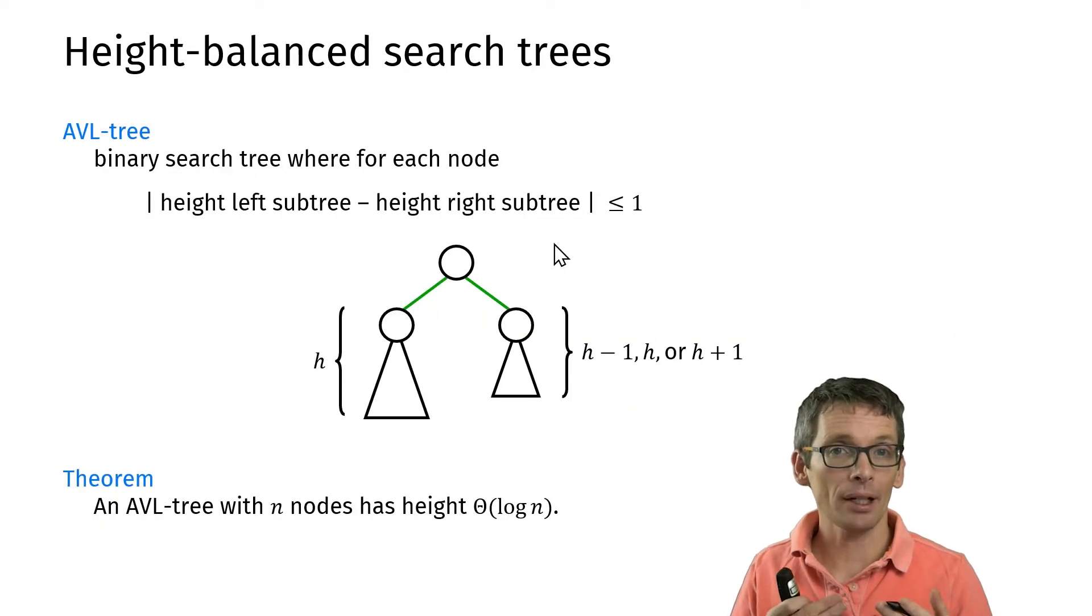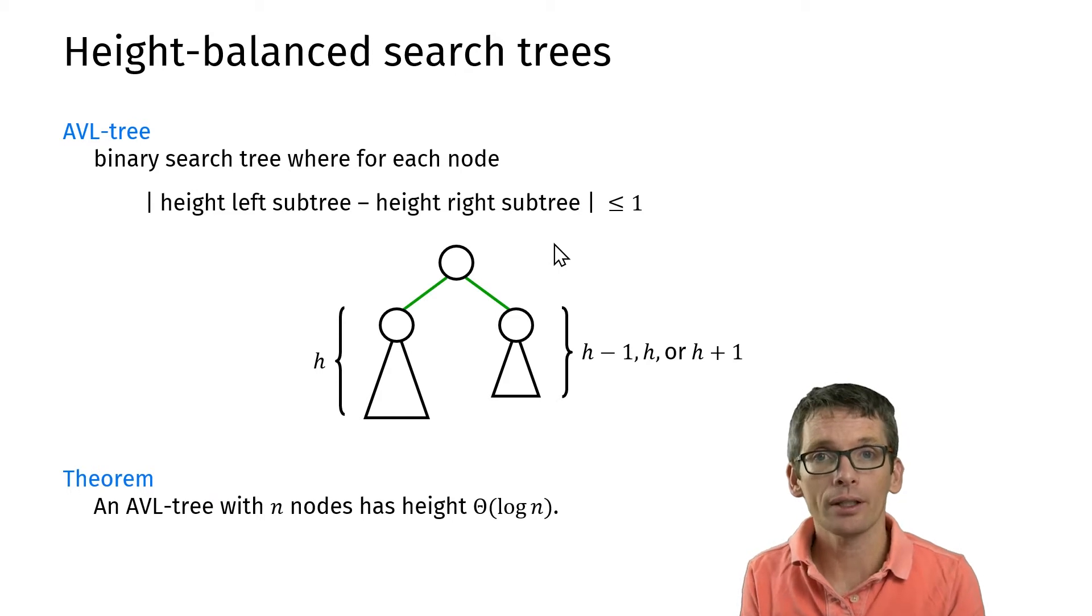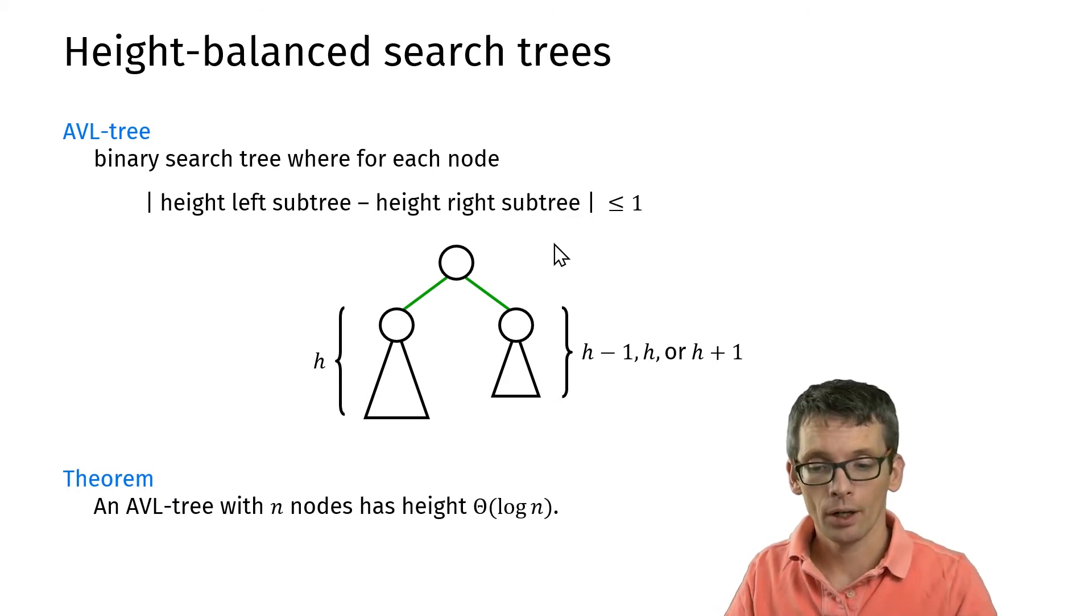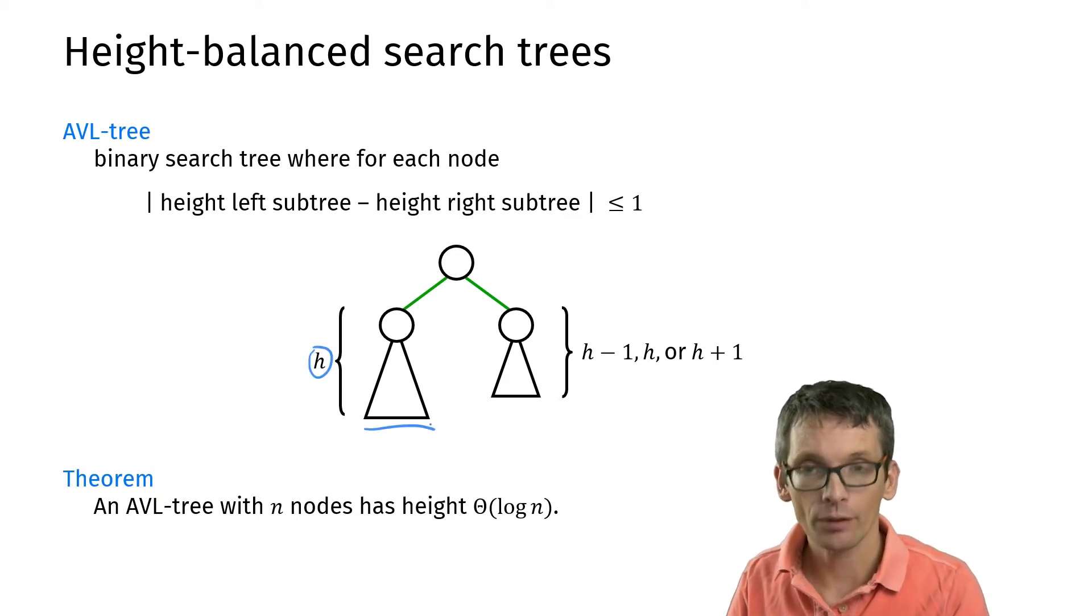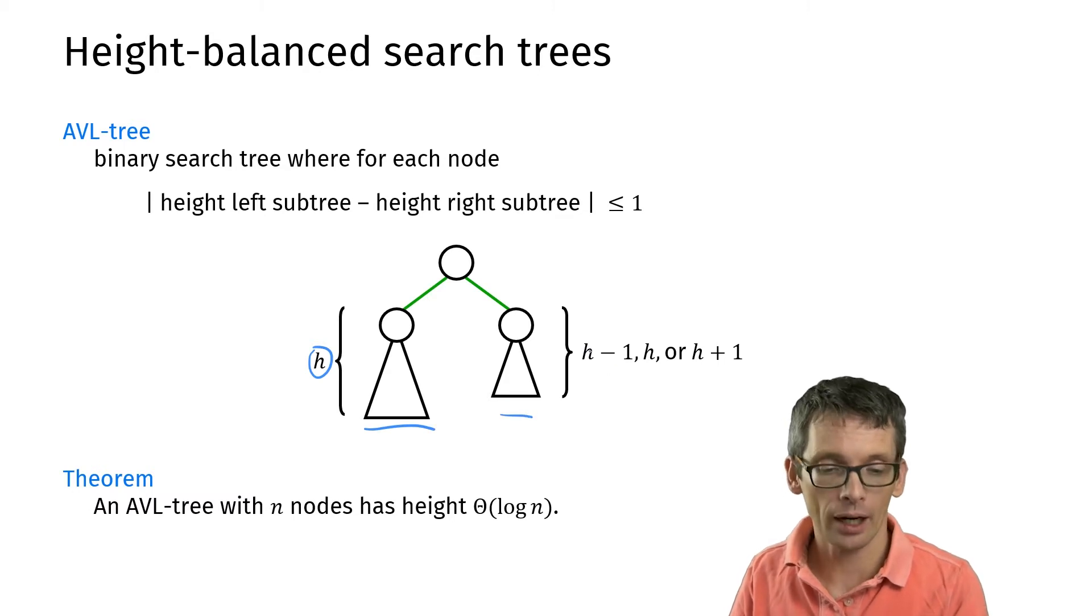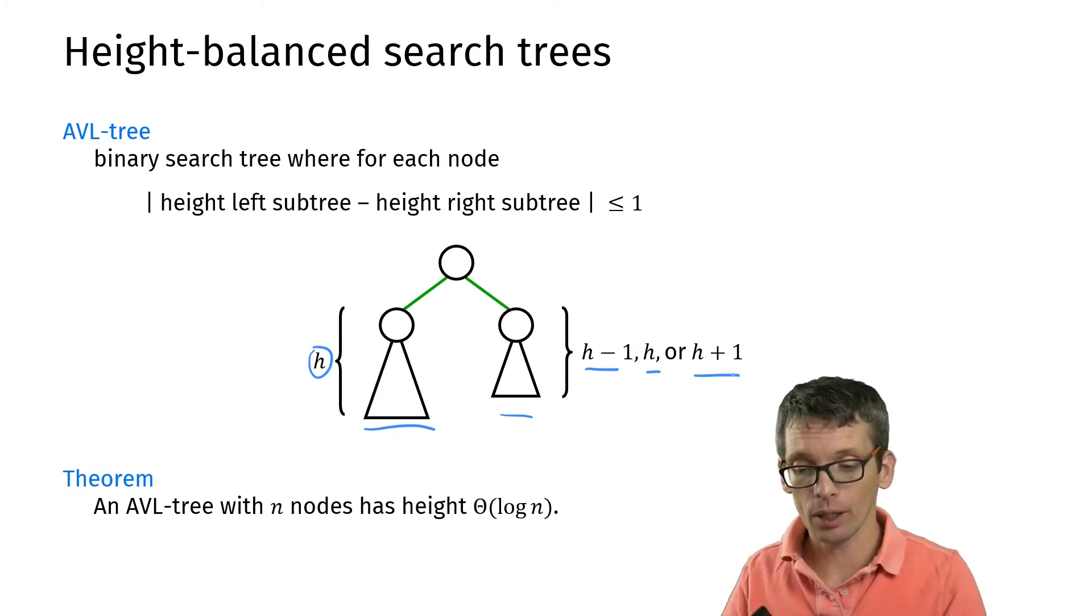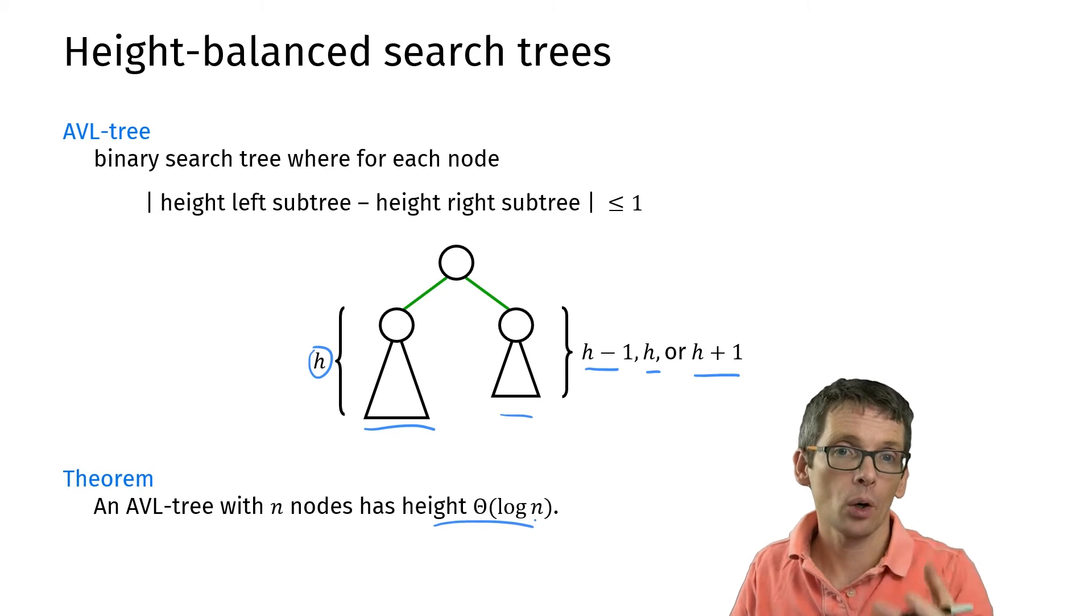An example of a height balanced search tree is an AVL tree. So what is an AVL tree? An AVL tree is a tree where for any node if I look at the left and the right subtree their heights differ by at most 1. So if h is the height of the left subtree then for the right subtree I have h - 1, h, or h + 1. And if I have this property, so if I have an AVL tree, then the height is bounded by order log n.